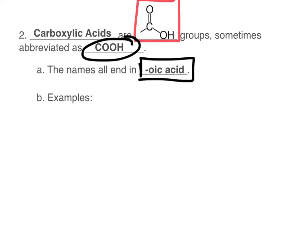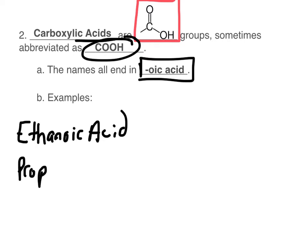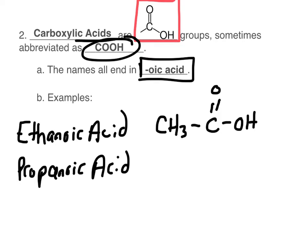They all end in -oic acid. Anytime you see a carboxylic acid, it ends in -oic acid. Let's draw a couple of carboxylic acids as our examples. We're going to draw ethanoic acid and propanoic acid. What does ethanoic acid look like? It looks something like this - two carbons again, but now we have our carboxylic acid group added to the end. What about propanoic acid?